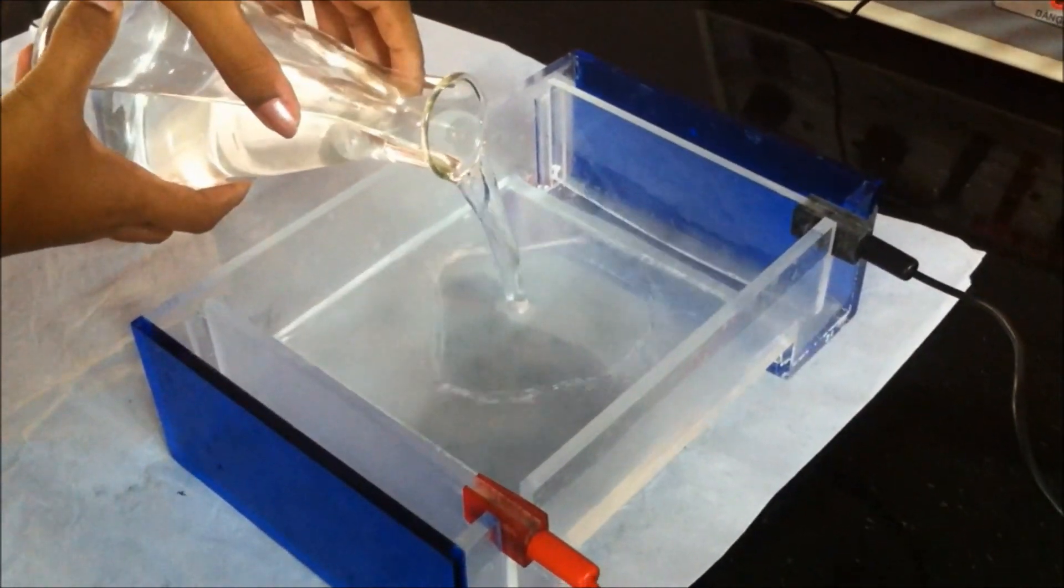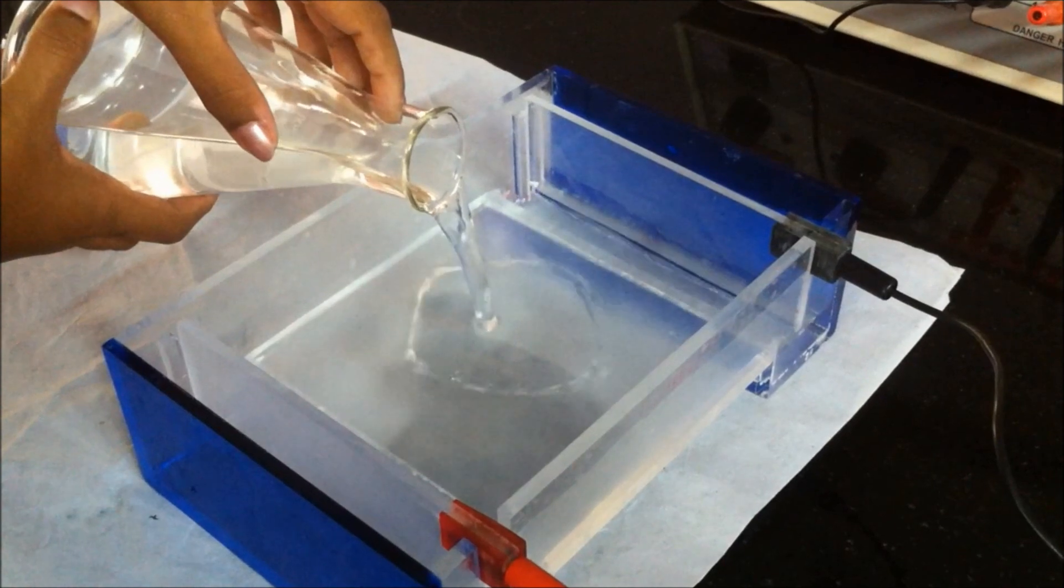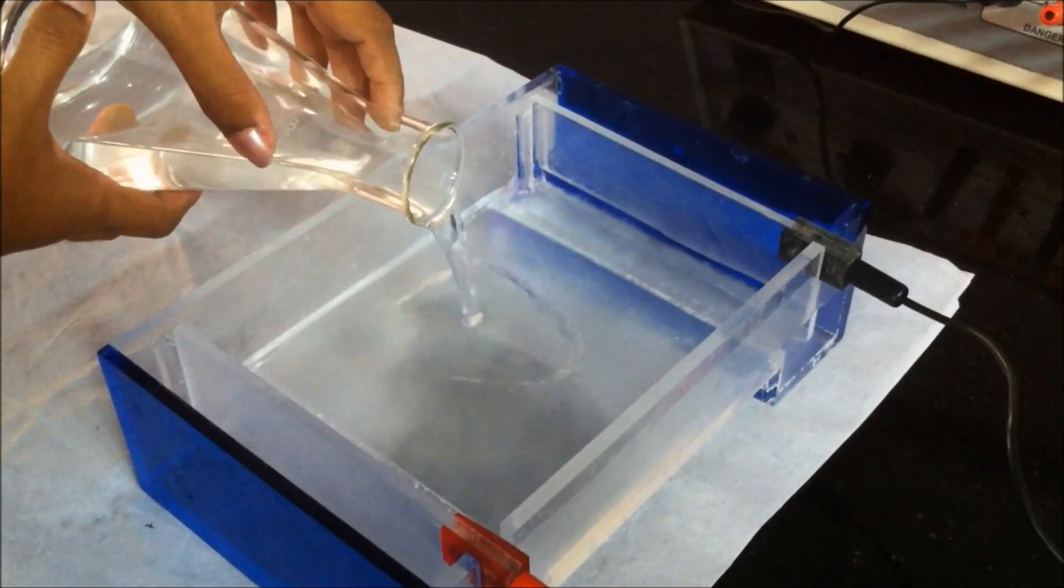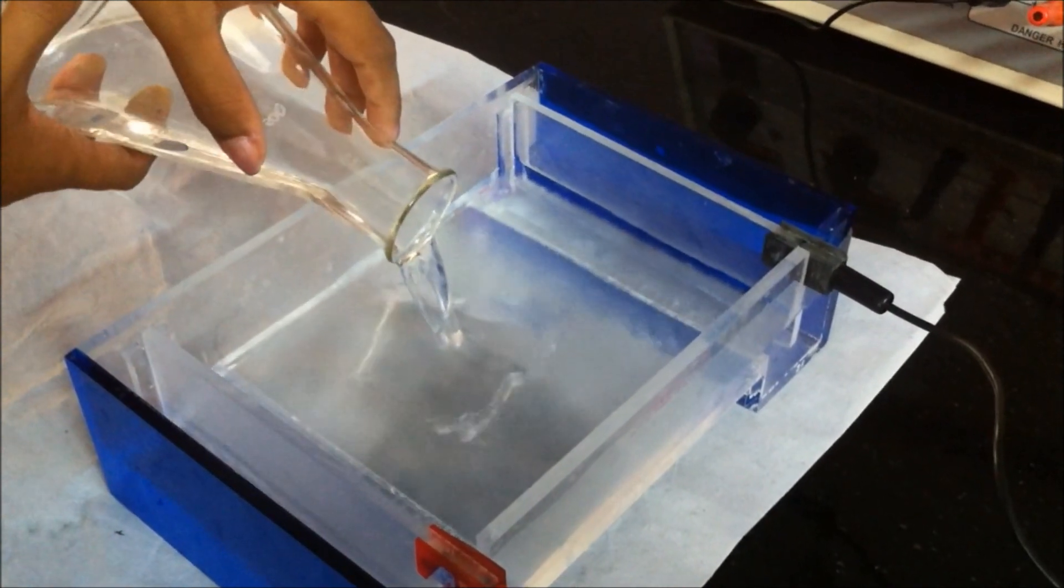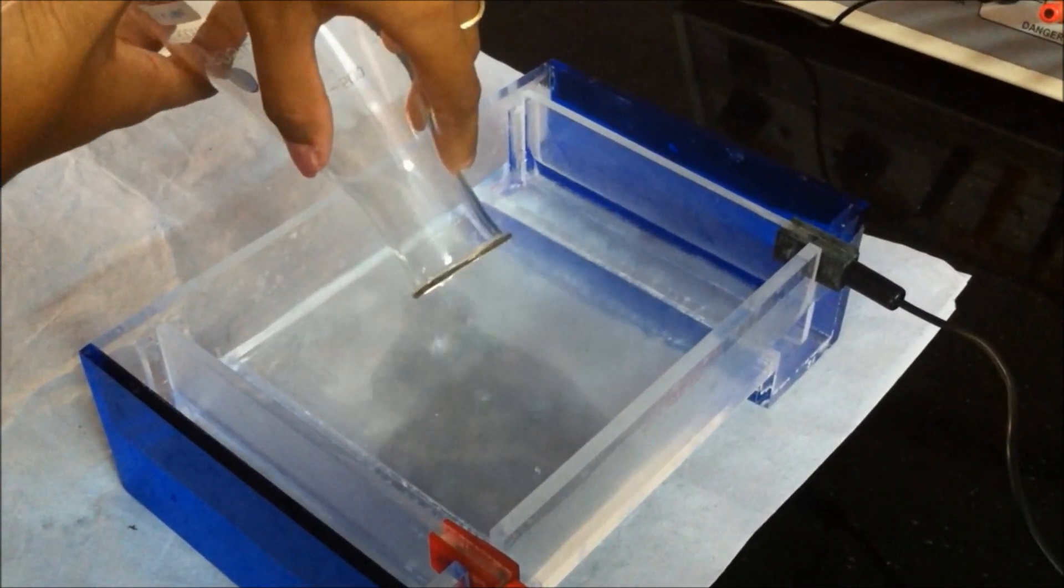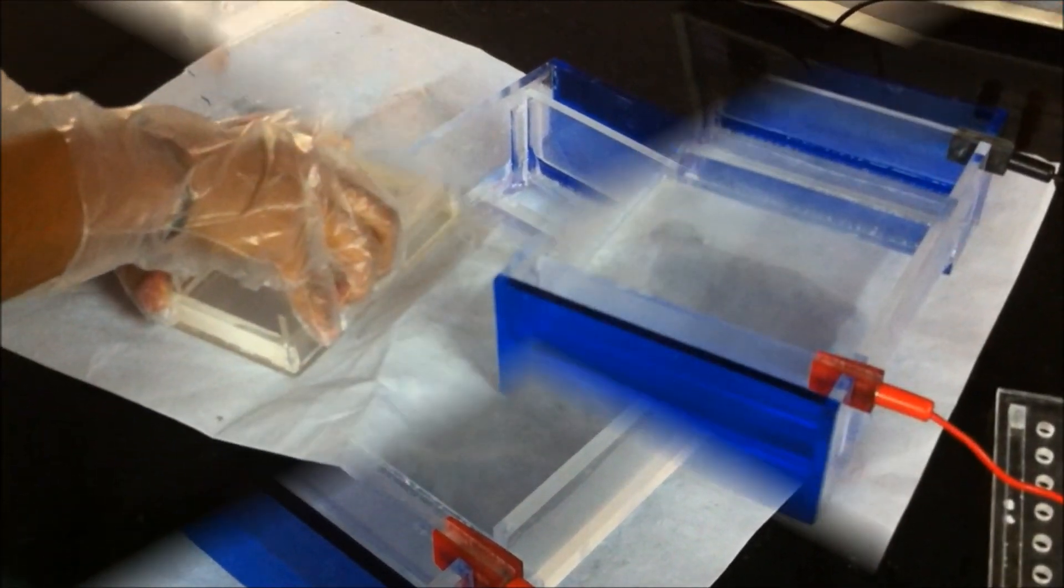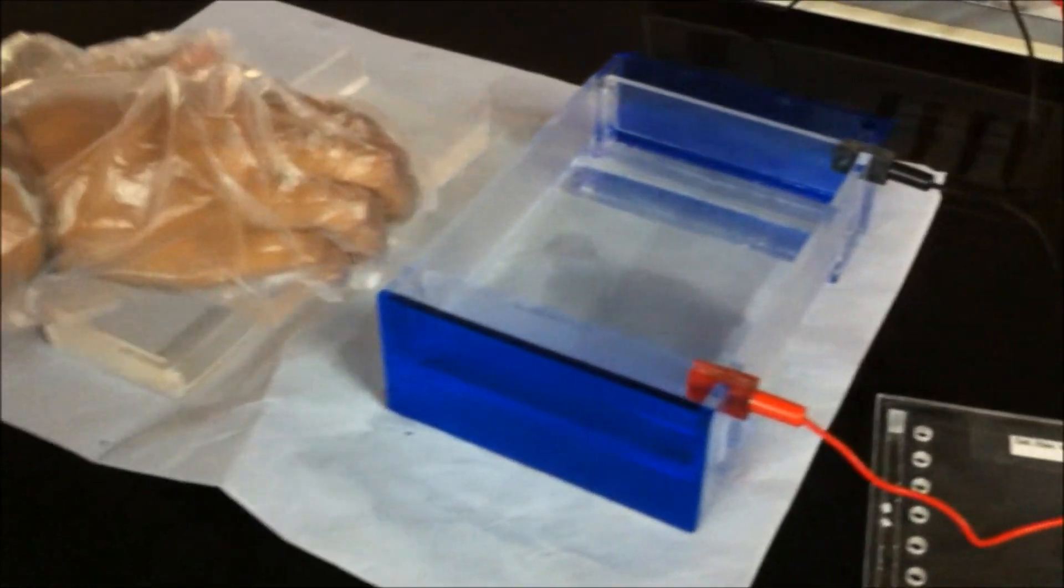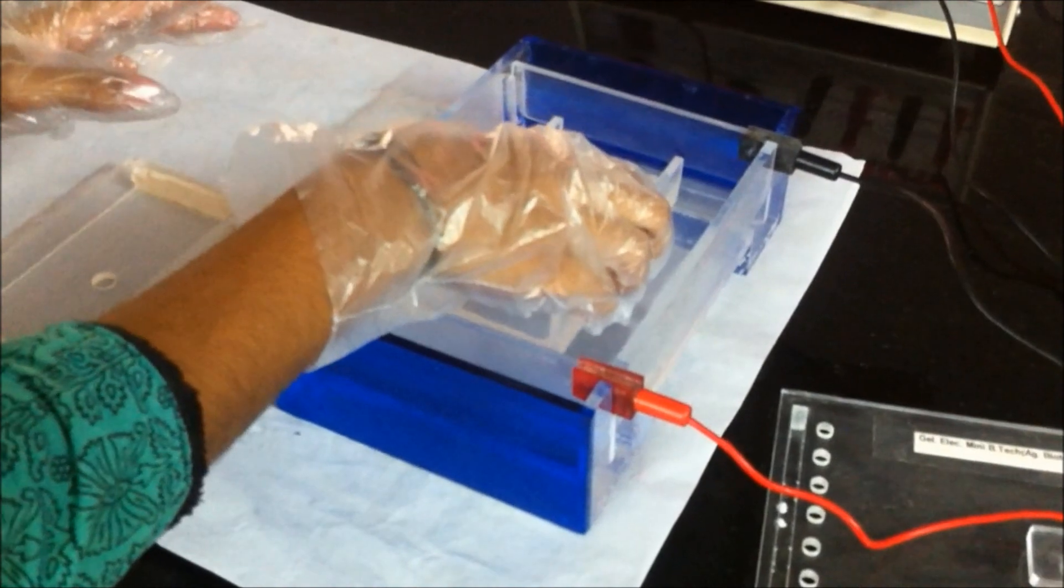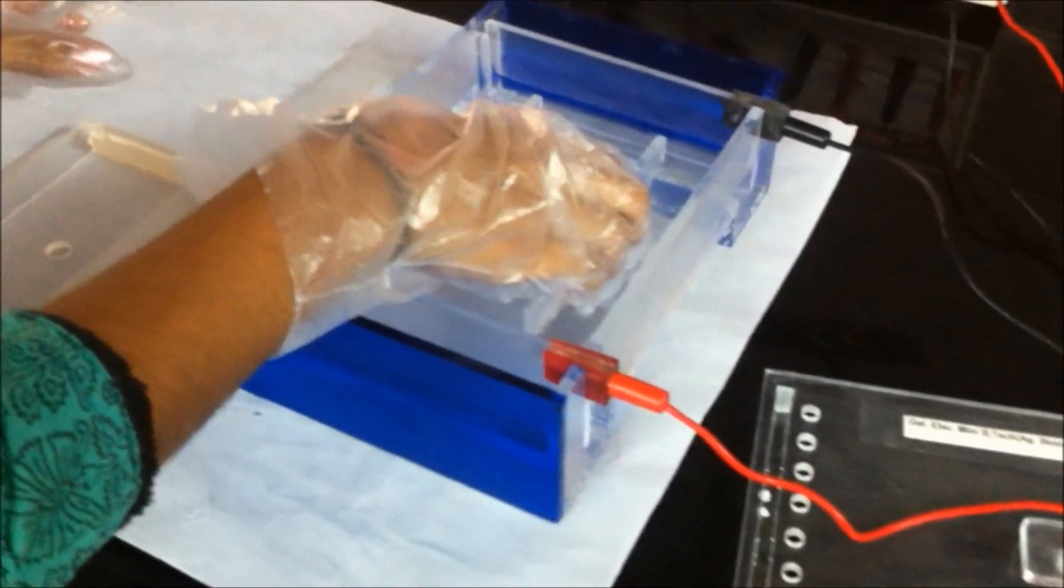Prepare 1X TBE buffer and pour it into the gel tank. Carefully remove the comb and place the plate inside the gel tank.